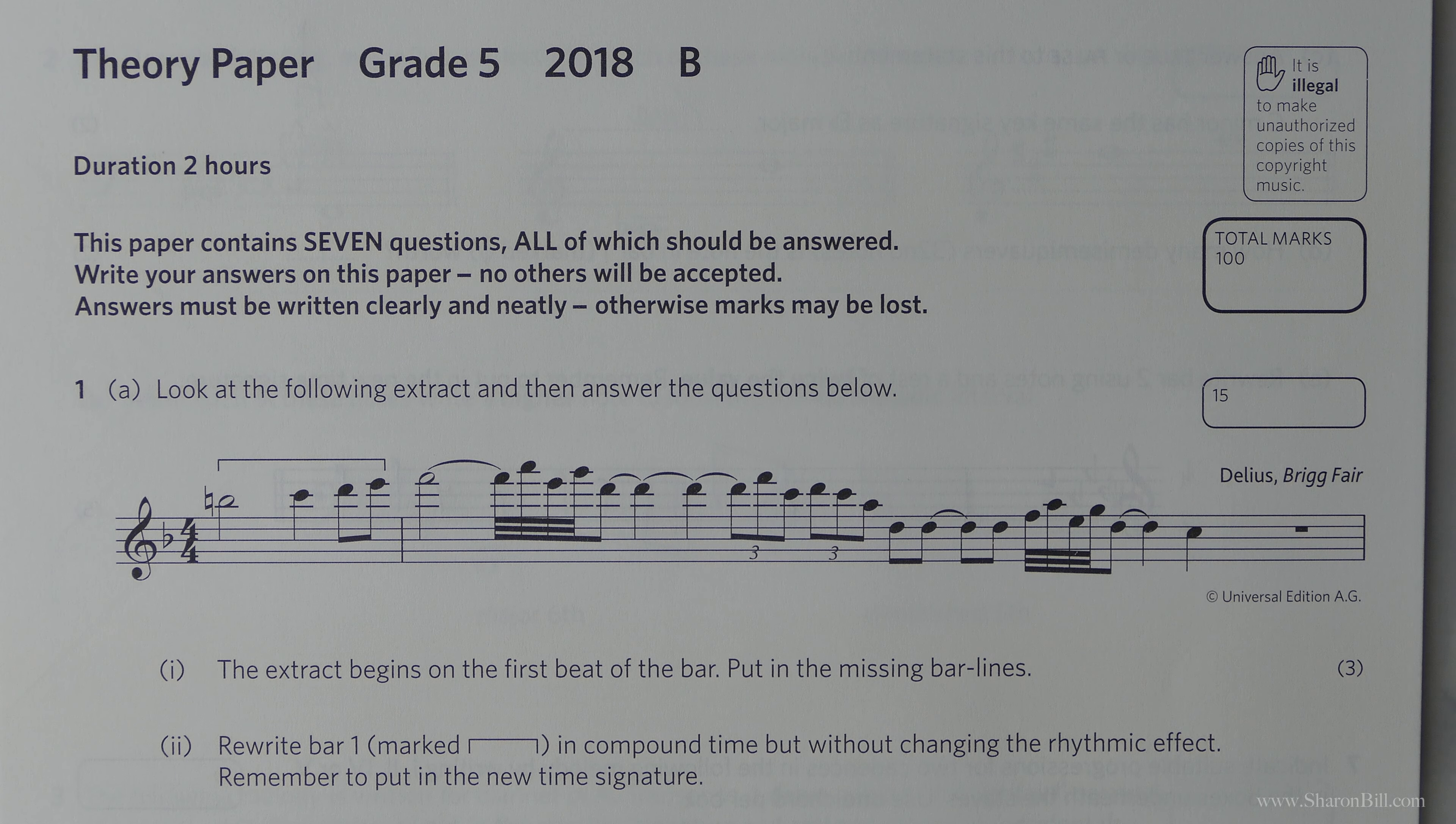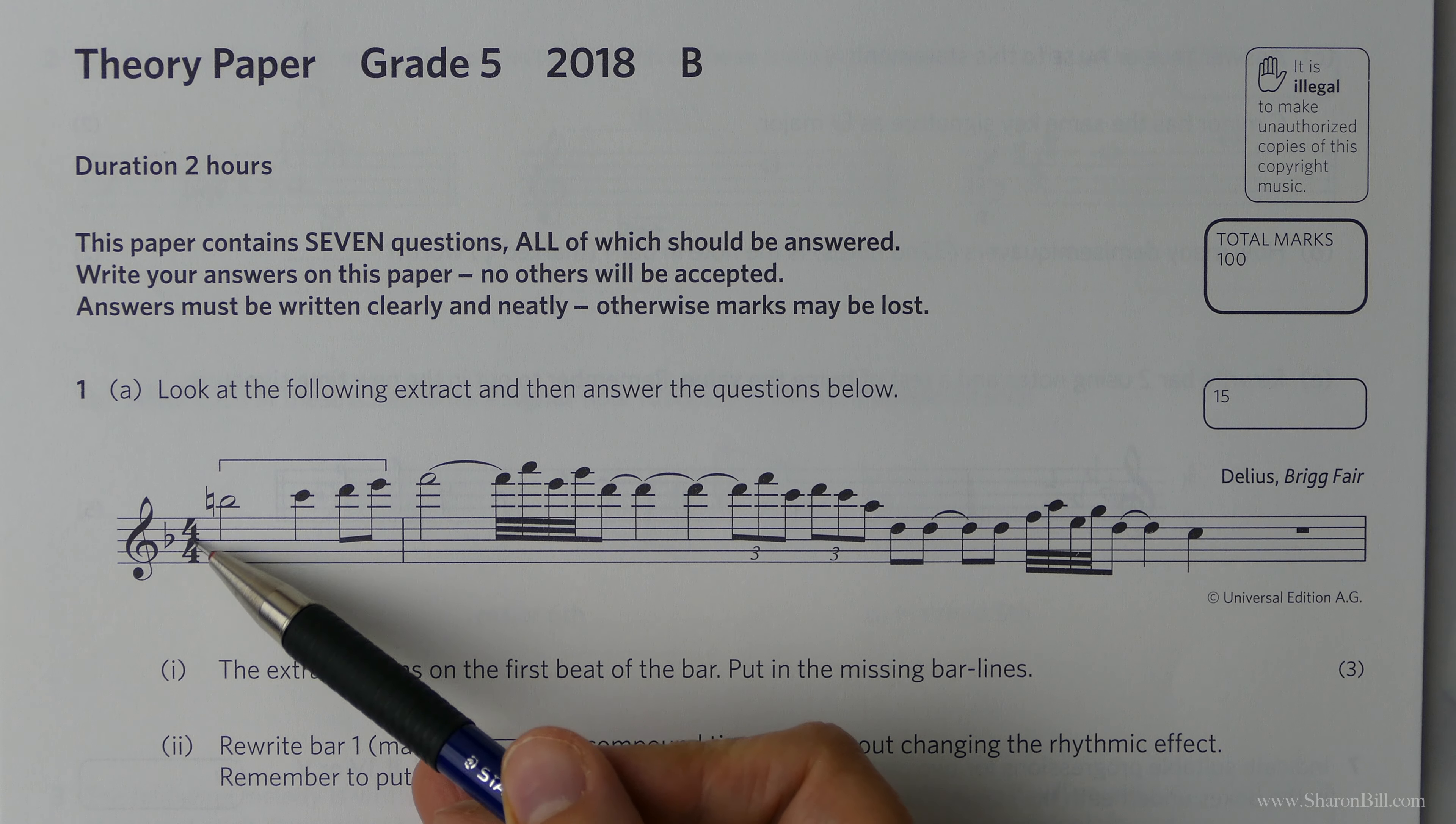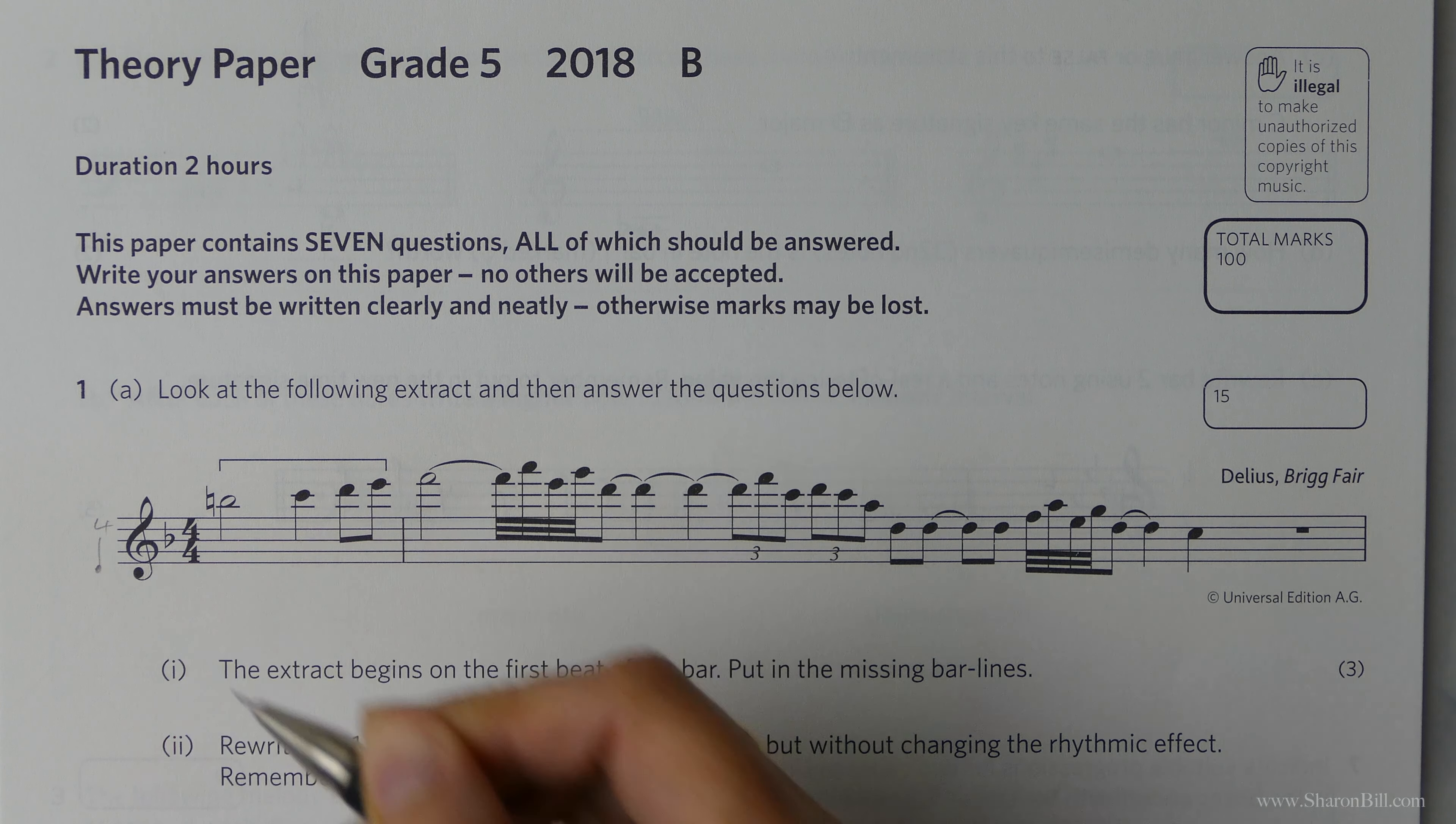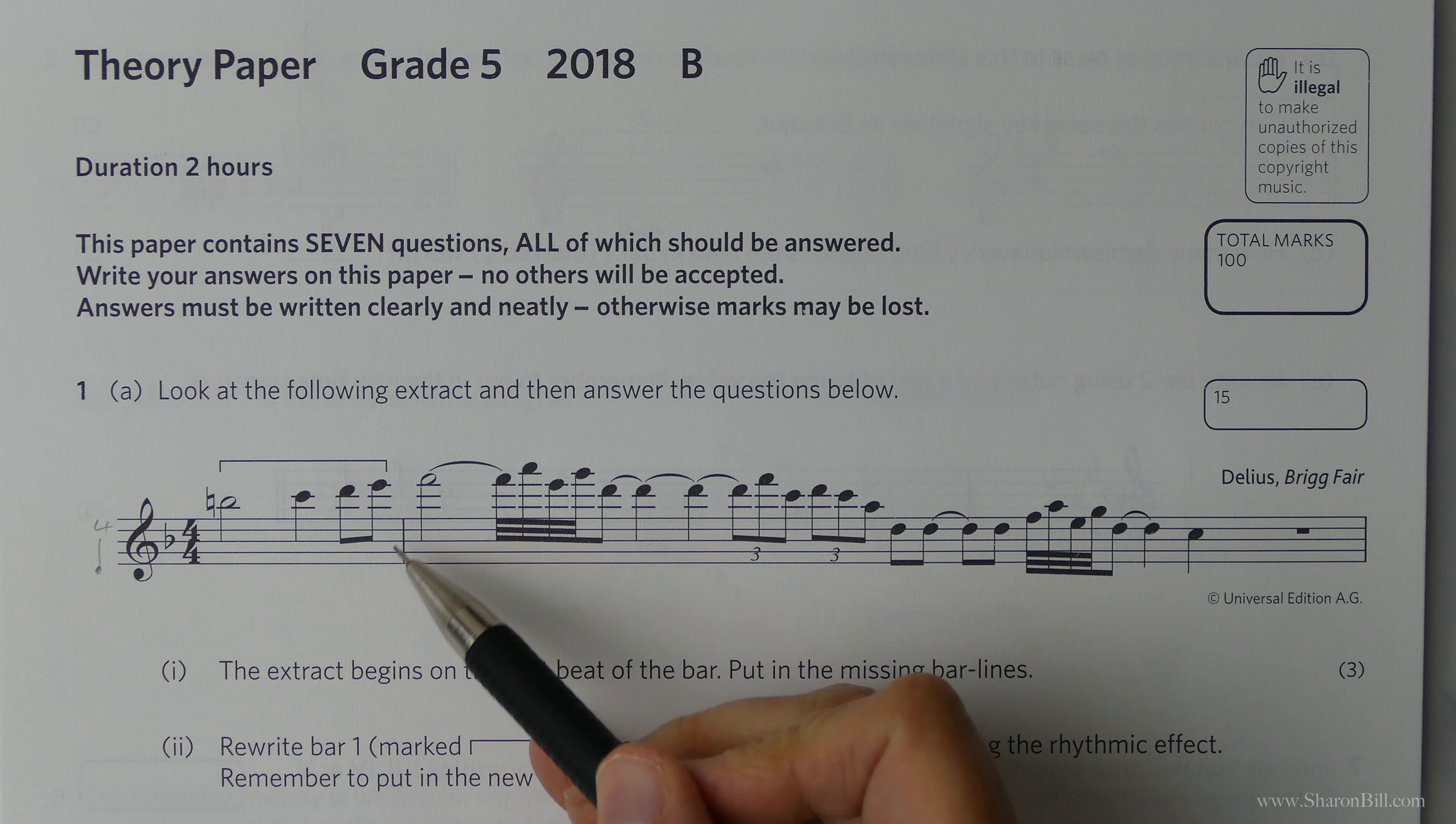So the first job that we're asked to do, relating back to this extract here, is we're asked to put in the bar lines. So the time signature is 4 over 4, 4 crotchet beats, 4 quarter notes per bar. So we need to add up to whatever makes that. So then, we've got the first bar given.